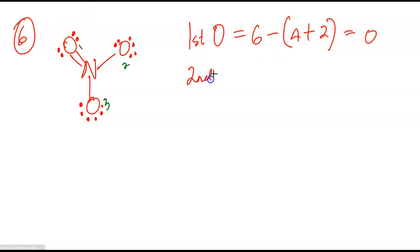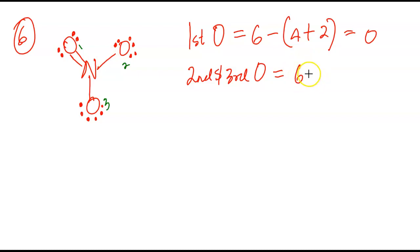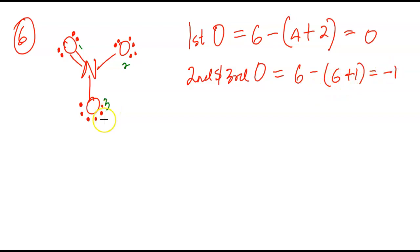The second and third oxygen will be the same because they have just single bonds and three pairs of electrons. Again, it's in group six. Six minus — how many dots does it have? Two, four, six — six dots — plus one bond, which is seven. Six minus seven will give you minus one. So oxygen two and three are each going to be minus one.